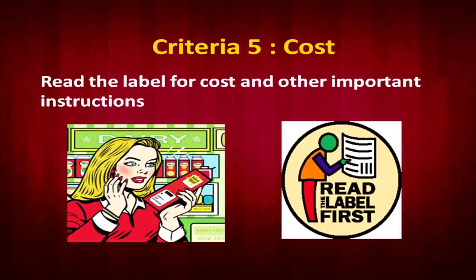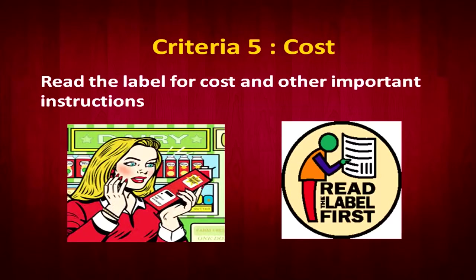The next criterion is cost. It always comes down to the cost of the actual material. If you can afford it, then only you can think of buying a particular item. To know the MRP — maximum retail price — it is important to read the label and other instructions on the product.